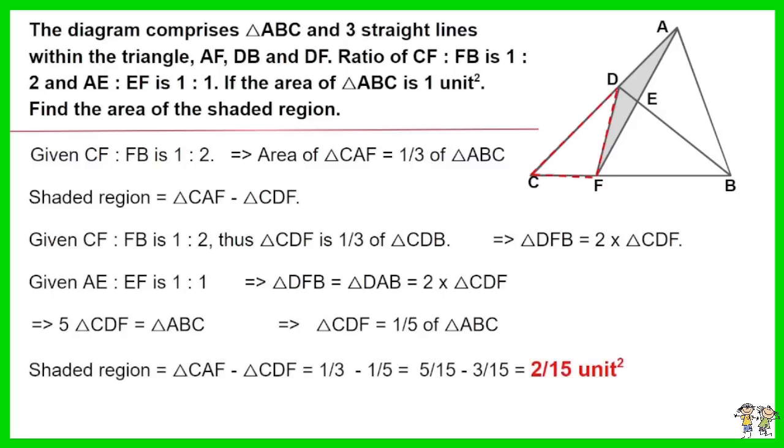The shaded region equals triangle CAF minus triangle CDF equals 1 over 3 minus 1 over 5. The answer is 2 over 15 unit square.